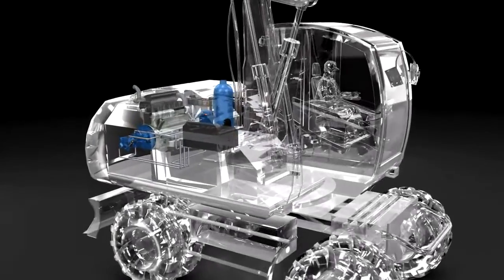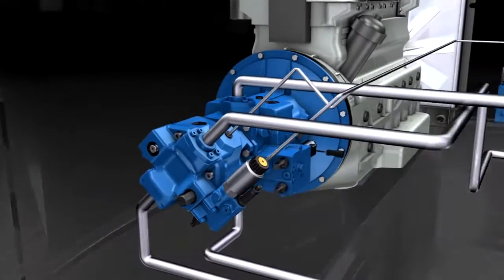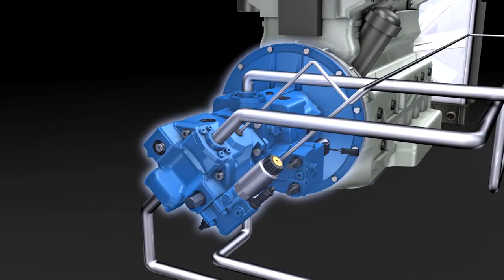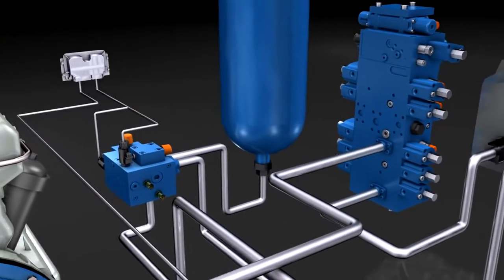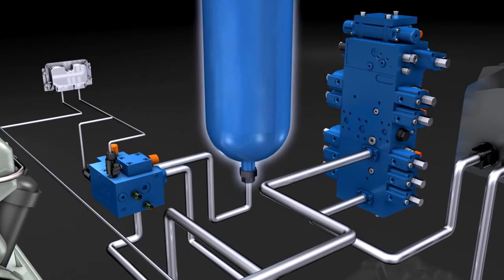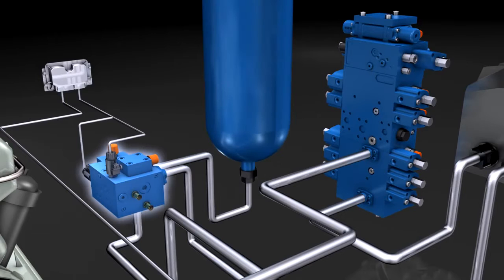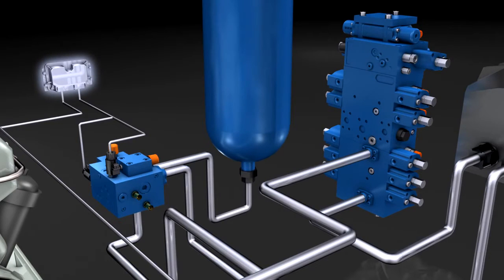The function module itself is located on the combustion engine and consists of a variable axial piston unit, a hydraulic pressure accumulator, a valve control block with pressure regulator valve, and an electronic BODAS controller.